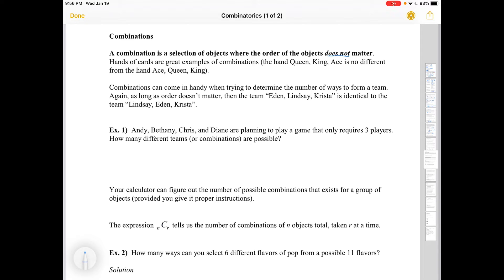Remember, your combination lock at your locker, that's not really a combination lock. The order matters. It's a permutation lock. Hands of cards are great examples of combinations, and they're really classic North American examples. The hand Queen, King, Ace is no different from holding the hand Ace, Queen, King. They're still the same members.